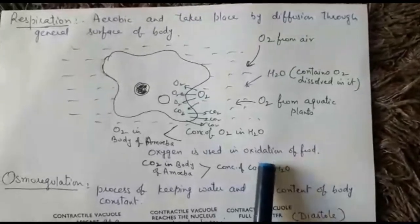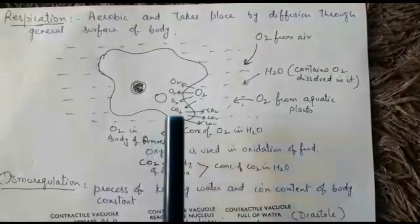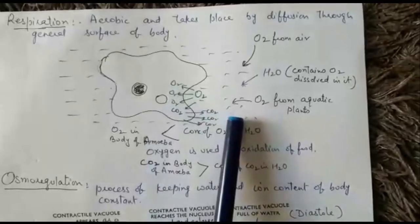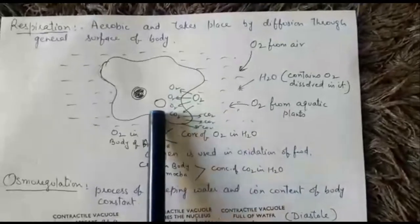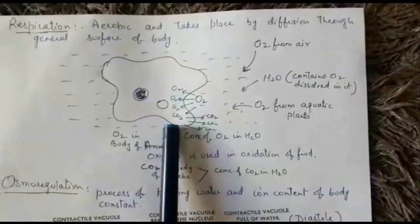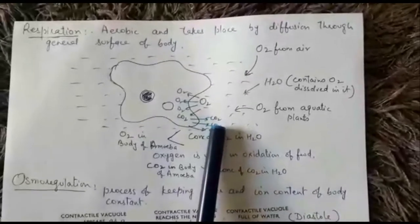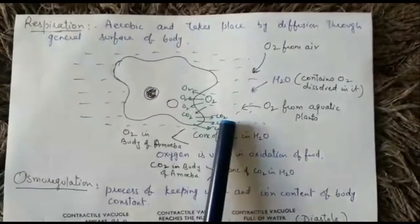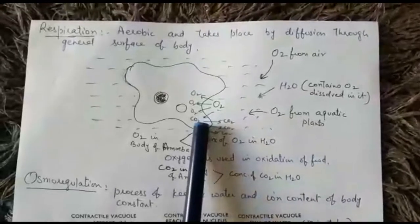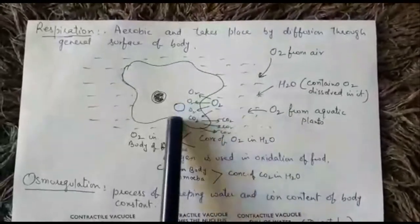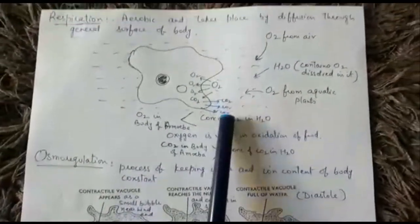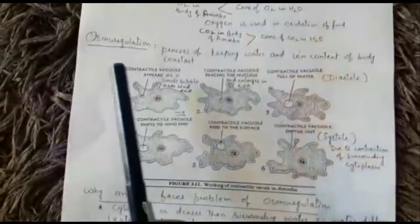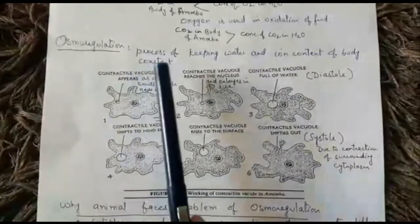Oxygen is used in the oxidation of food. Through glycolysis and the TCA cycle, carbon dioxide is produced. So the level of carbon dioxide in the cytoplasm is more than in the surrounding water. When oxidation of food occurs, carbon dioxide is produced inside the body, so its level inside is high and outside is low. Naturally, carbon dioxide will move from the interior of the body to the surrounding water. By this simple process of diffusion, the animal takes up oxygen and gives out carbon dioxide — this is how respiration occurs in amoeba through the general surface of the body.